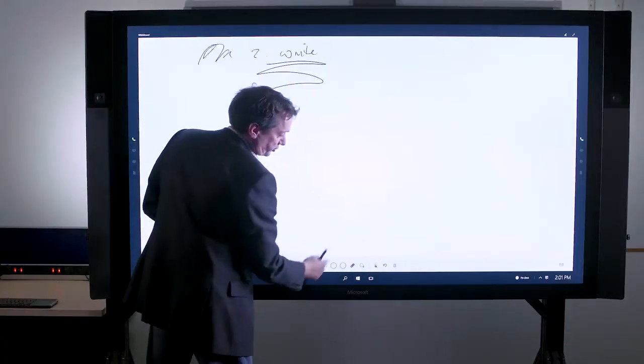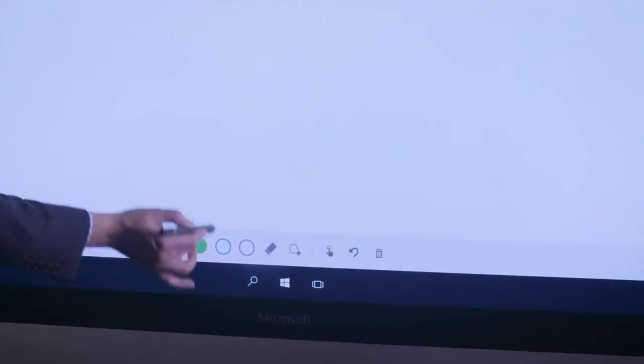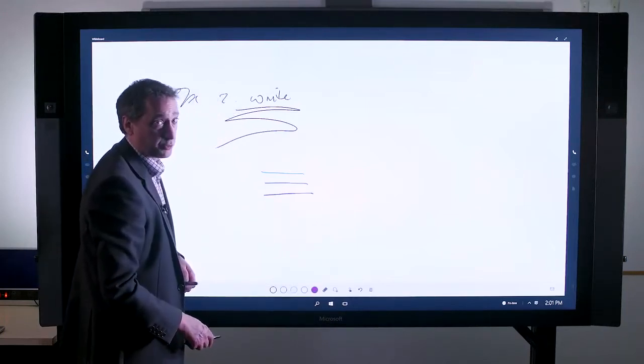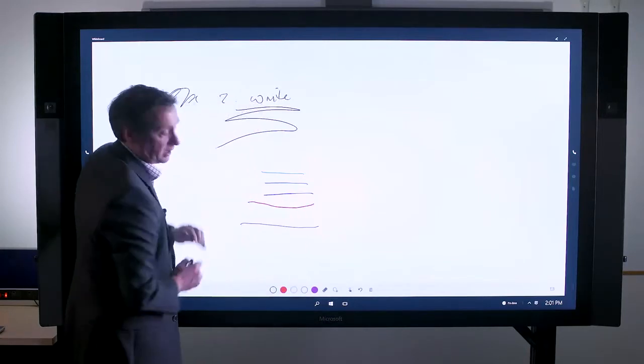From the pen perspective, at the bottom of the screen, I have my pen controls. Here, I can change pen color very easily and very simply. And in fact, because the Surface Hub will support three pens simultaneously, I can have two pens running in different colors.